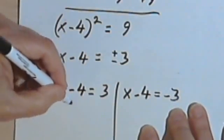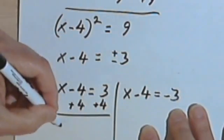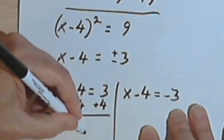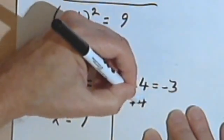And I'll solve each one. So adding 4 to both sides, I'll end up with x equals 7. And over here, adding 4 to both sides...